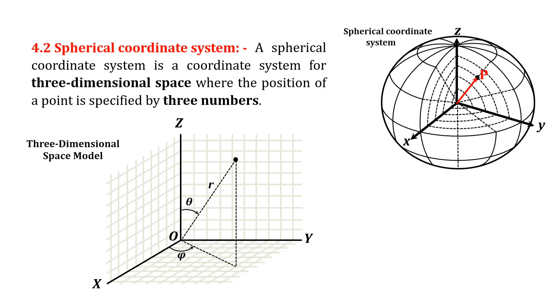The polar angle theta is measured between the Z-axis and the radial line R.